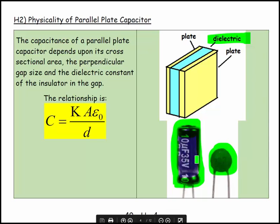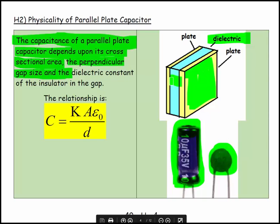Big capacitors don't necessarily have the largest capacitance. Sometimes a little small capacitor, because of different technology, can have a very high capacitance. Some of them can only have a potential difference one way. Some can handle alternating signals. There's a tremendous variety in their design, makeup, and manufacture. The capacitance of a parallel plate capacitor depends upon its cross-sectional area, the perpendicular gap size (the distance between the two plates), and the dielectric constant of the insulator in the gap.